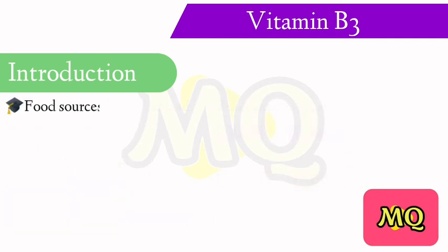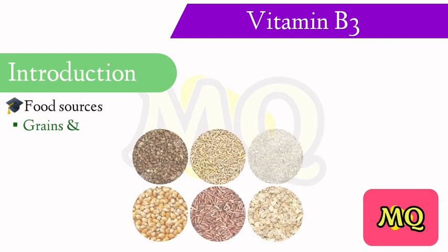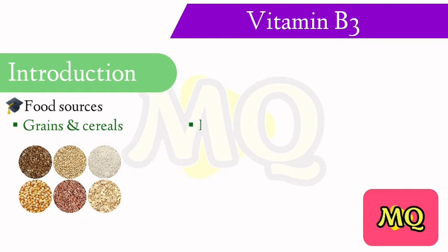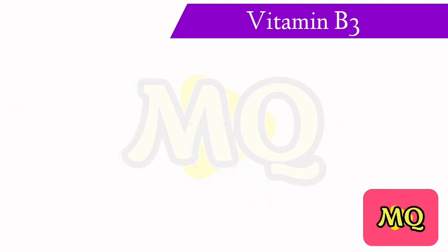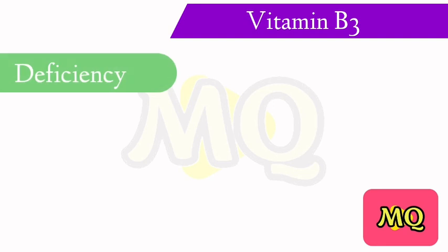The food sources for niacin: grains and cereals are major plant-based sources, while milk and lean meats, especially liver, are major animal-based food sources.